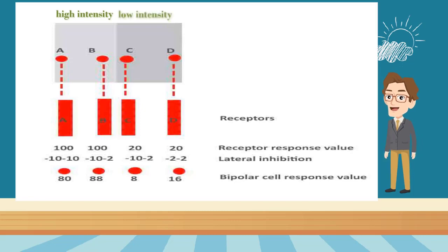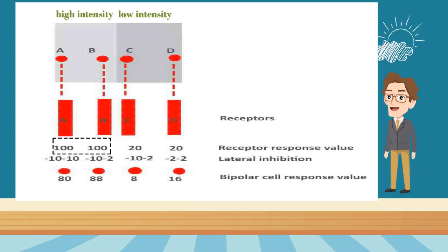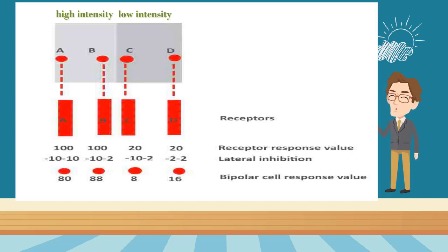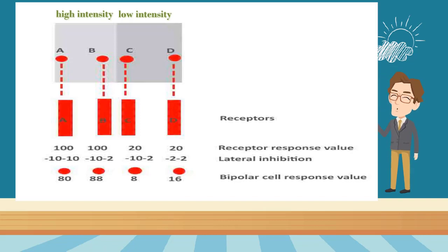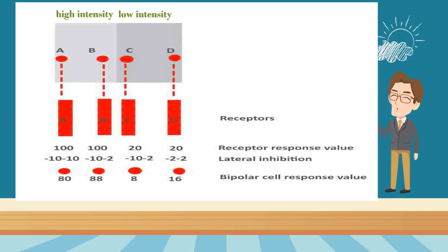The four receptors receive stimulation from four locations: A, B, C, D. The response values of receptors A and B are all 100. The response values of receptors C and D are all 20. But similar neurons inhibit each other, which is called lateral inhibition. When each receptor cell is inhibited, the response value decreases. Assuming that lateral inhibition of A and B reduces the response value of adjacent neurons by 10, since neuron B is adjacent to A and C, the final response value of neuron B is 18.